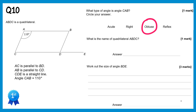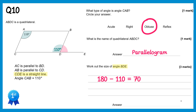For the second part we need to name quadrilateral ABDC. We're told AC is parallel to BD, and AB is parallel to CD — two pairs of parallel lines — so it must be a parallelogram. For the final part, opposite angles in a parallelogram are equal, so the angle opposite 110° is also 110°. Since CDE is a straight line, angle BDE = 180 − 110 = 70 degrees.